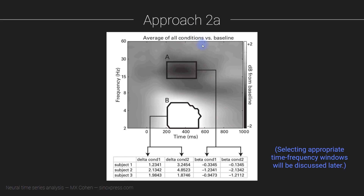Now let's talk about Approach 2. In Approach 2, what you do is average all of your conditions and all subjects together, and look at a time-frequency power plot — the grand total average relative to baseline, so baseline normalized. Then you look through your map and pick some time-frequency window, draw a box around it, or do a test against baseline to define a statistically masked region of interest. There are a couple of different ways to define your time-frequency region of interest.